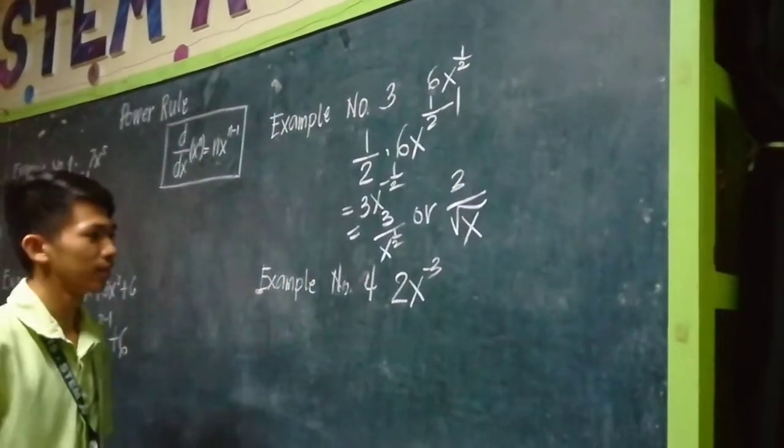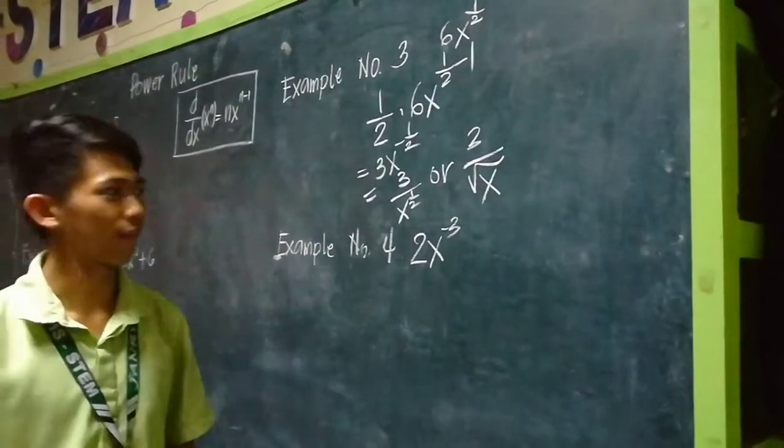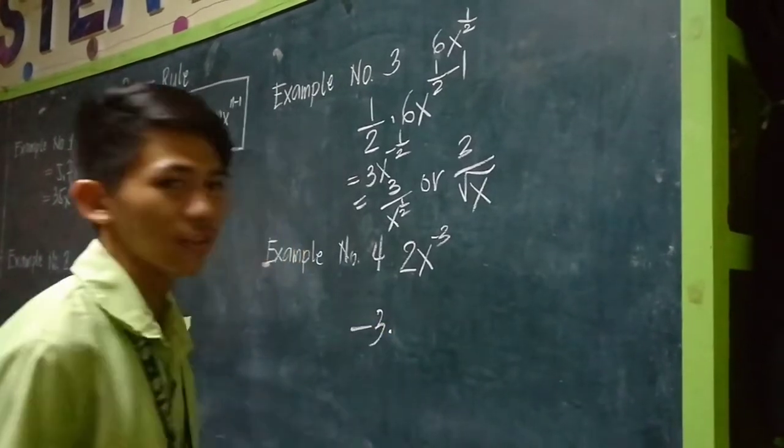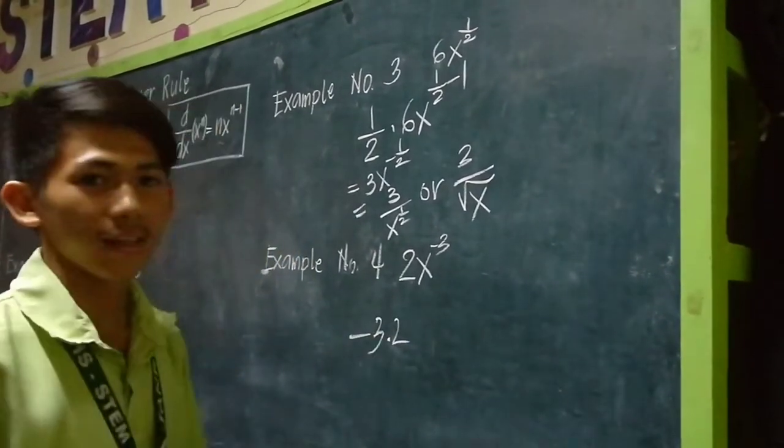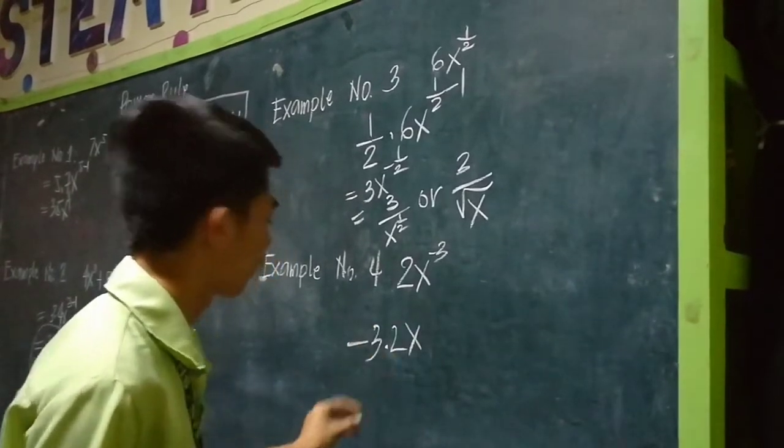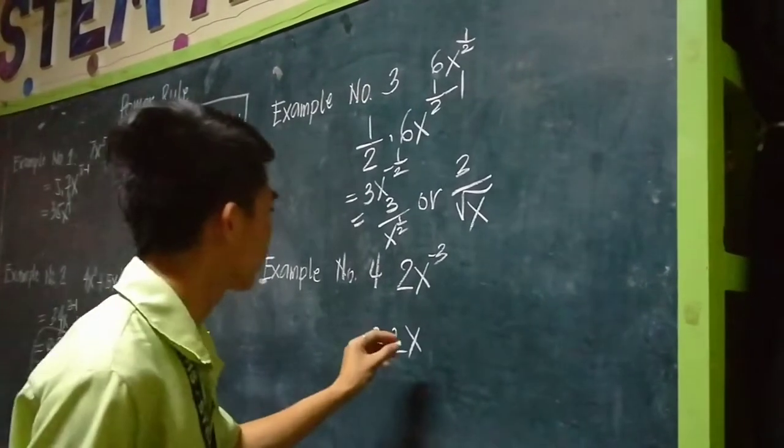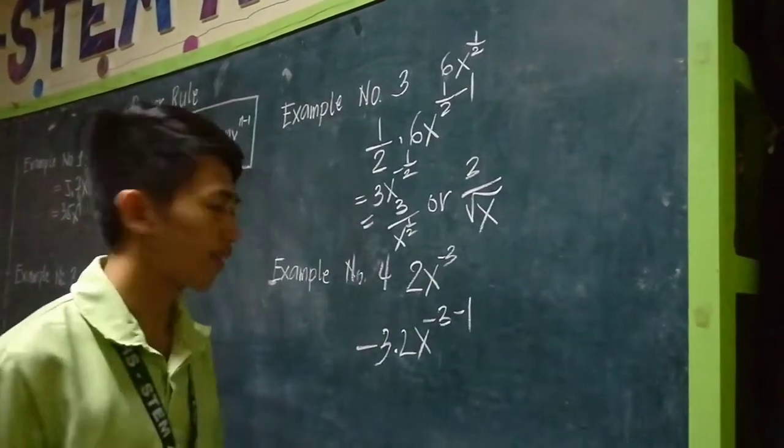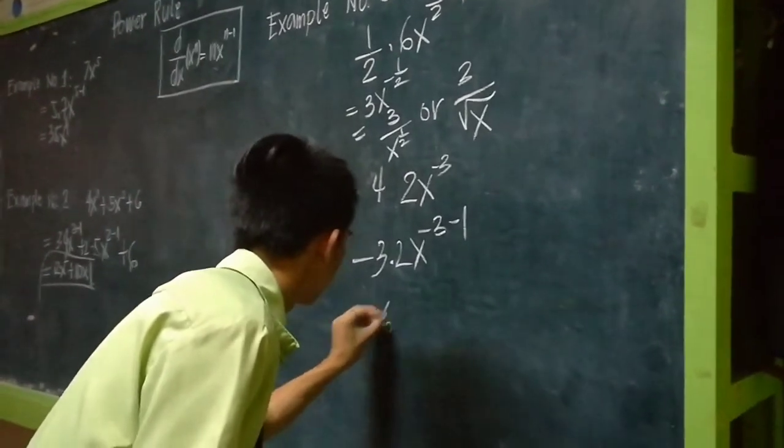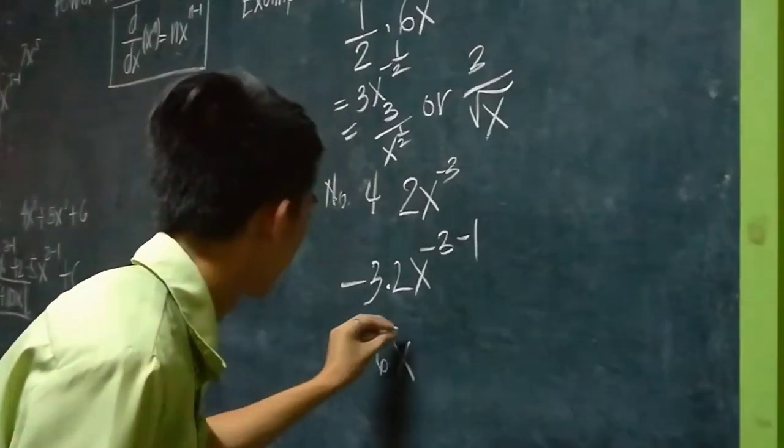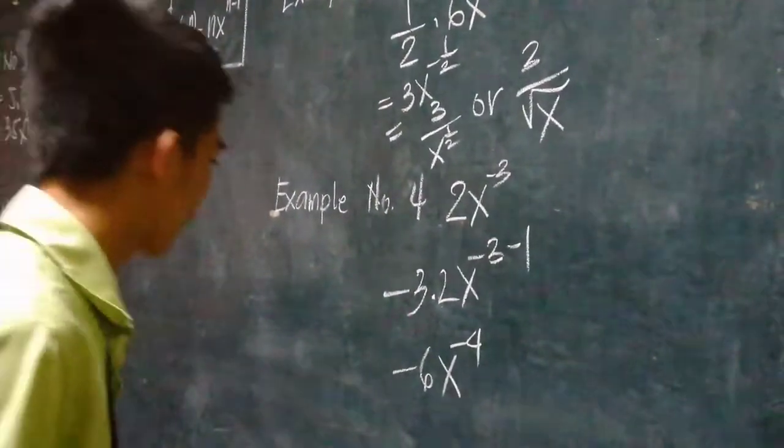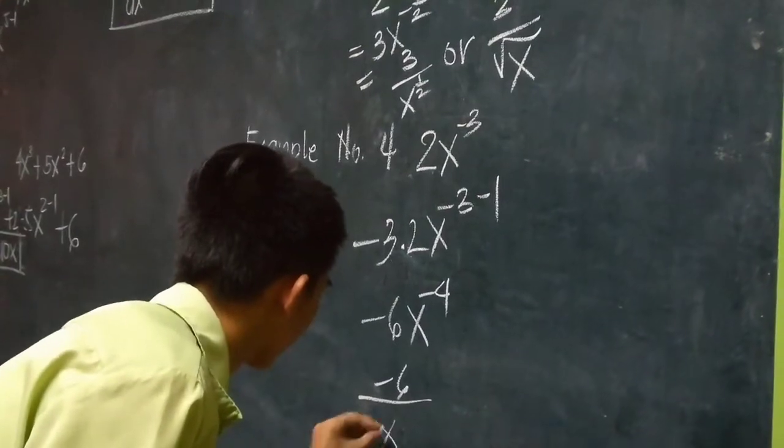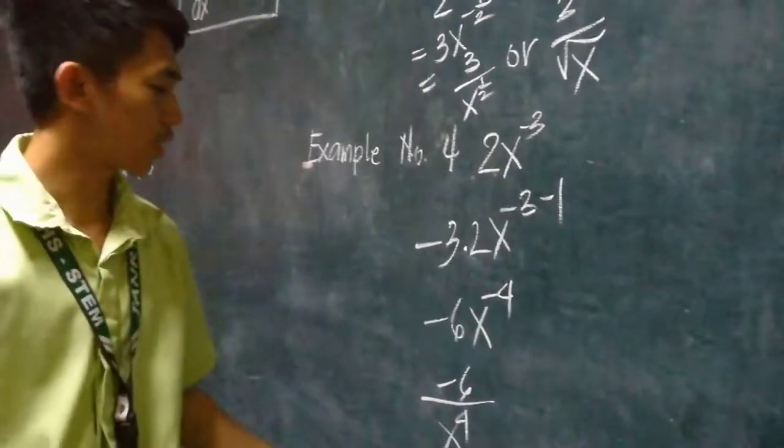Example number 4: 2x^(-3). Again, take down the exponent, multiply it to the coefficient of 2, then copy x, and subtract 1 from the exponent. So negative 3 minus 1 equals negative 4. Simplify it: negative 6x^(-4), which becomes negative 6 over x^4. That is your final answer.